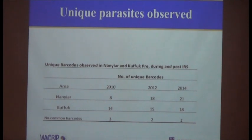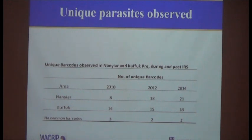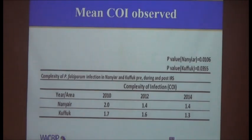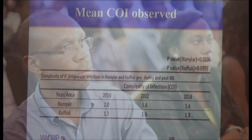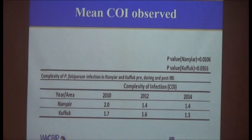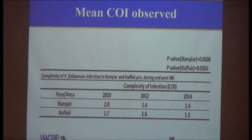For the COI, we compared the mean complexity of infection. From 2010 we found three common parasite types, and then three again, and then two each for 2012 and 2014. The mean complexity of infection in 2010 was 2.0, then it dropped to 1.4 in 2012 and was maintained at 1.4 in 2014. For the other community it was 1.7, dropped to 1.6, and then to 1.3. As transmission was reducing, there was a reduction in complexity of infection as predicted.